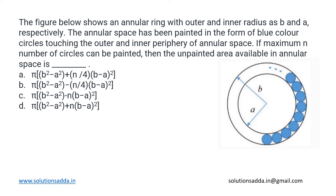This is a mathematical aptitude question. We have been given a figure which is an annular ring — one circle inside the other. The radius of the outer circle is b and that of the inner circle is a. The annular space, the white area which is the difference between these two circles, is painted with blue balls such that each blue ball touches both circles, and we can accommodate n such blue balls.